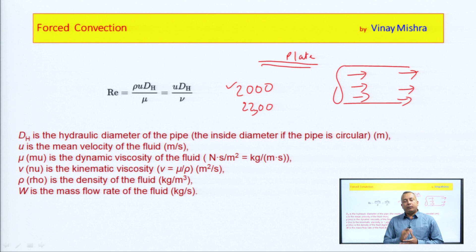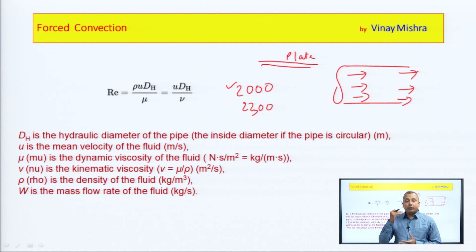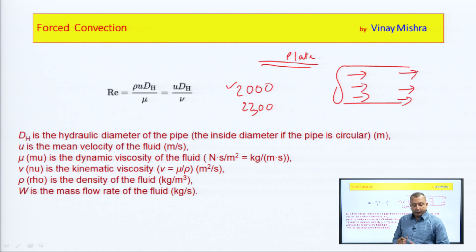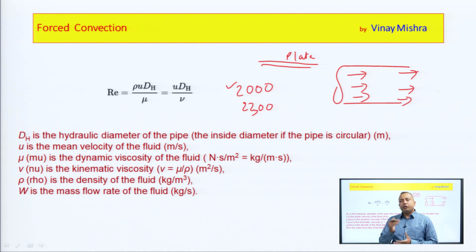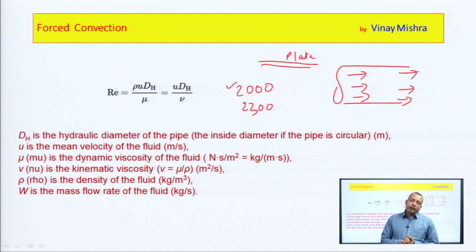If we go to the flat plate, we will see that the critical Reynolds number value is 5 into 10 to the power 5, and this is what we consider in general.